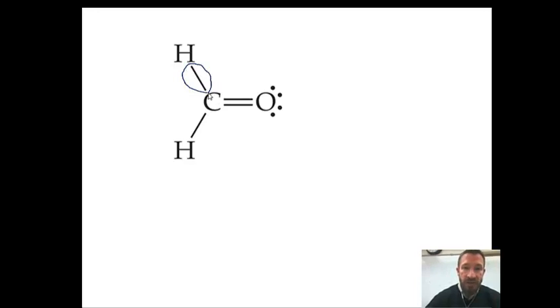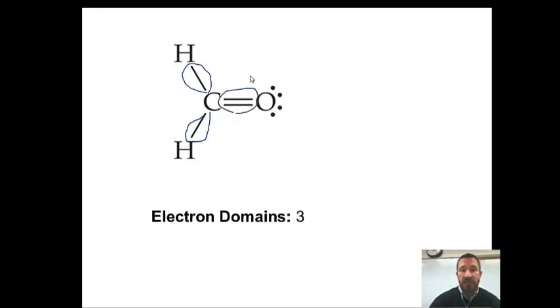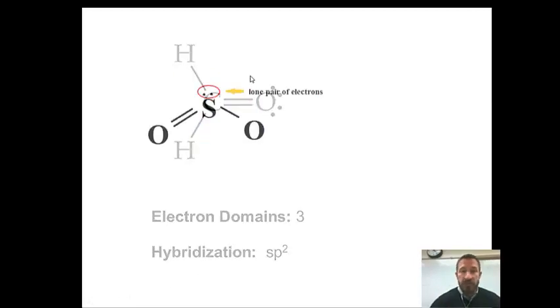So if we count electron domains, there's one, there's two. And remember, multiple bonds count as one, so there's three electron domains. So we have three electron domains. And with three electron domains, the hybridization for that would be SP2. It contains 1s and 2p orbitals.